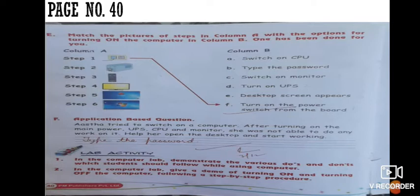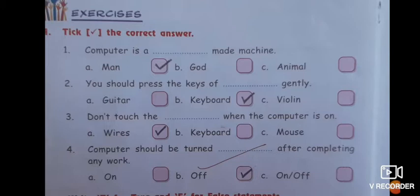Let's start with its first part, A, which is on page number 38. So first is take the correct answer. First one is computer is a dash made machine: man-made machine. You should press the keys of dash gently: keyboard.